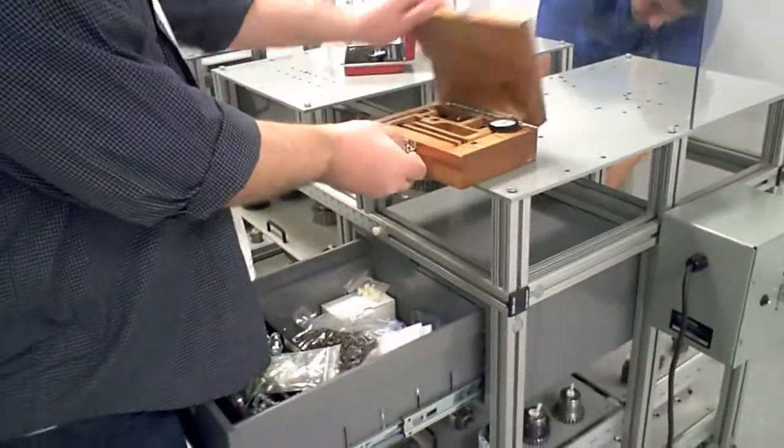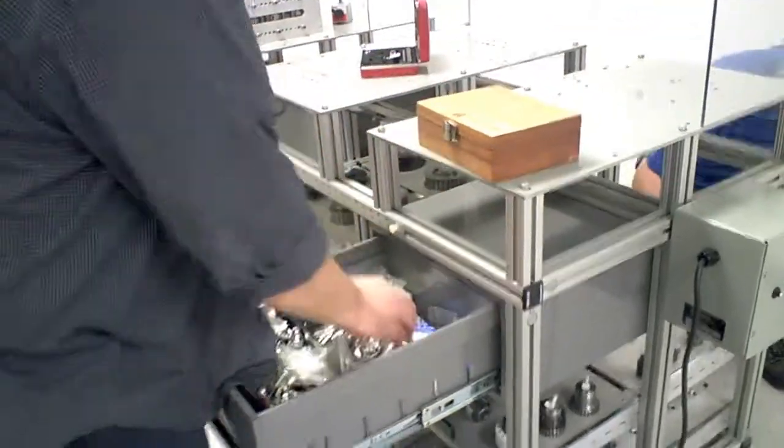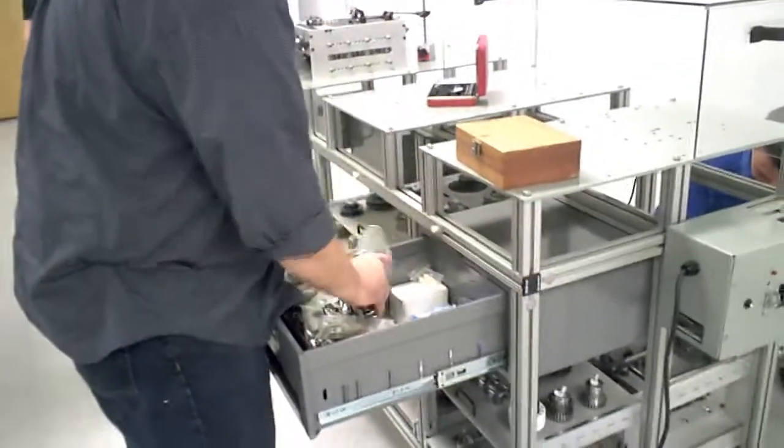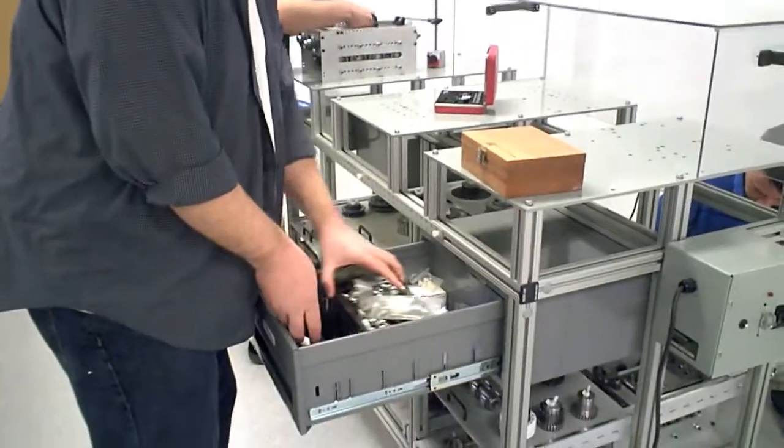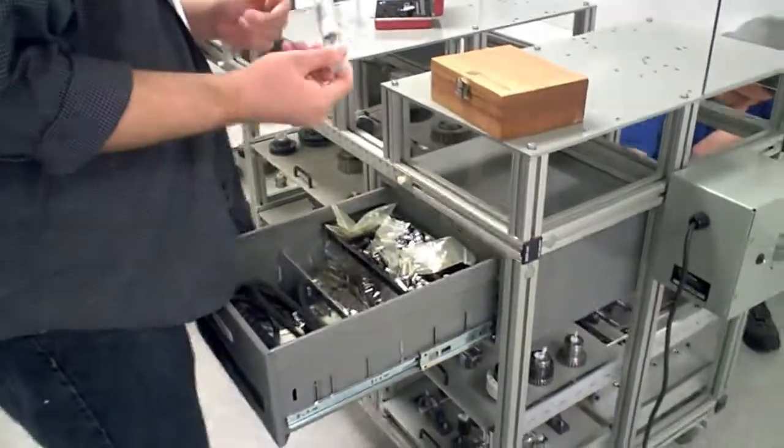Each station includes an indicator kit, a magnetic base, a chain, stopwatch, shims, mounting hardware, belts, and a belt tensioner.